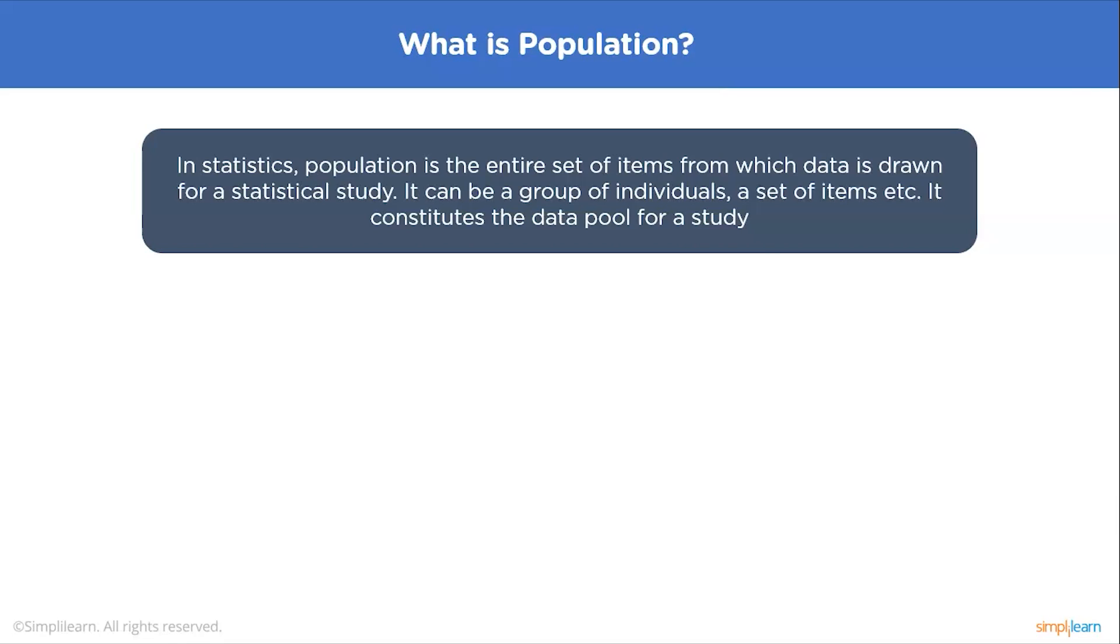Usually when we talk about population you think about the people living in an area at a time. But in research, a population doesn't always refer to people. It can mean a group containing elements of anything you want to study, such as objects, events, organizations, countries, species, organisms, etc.